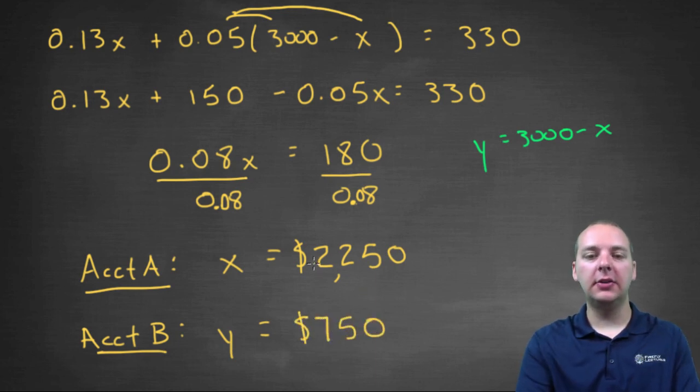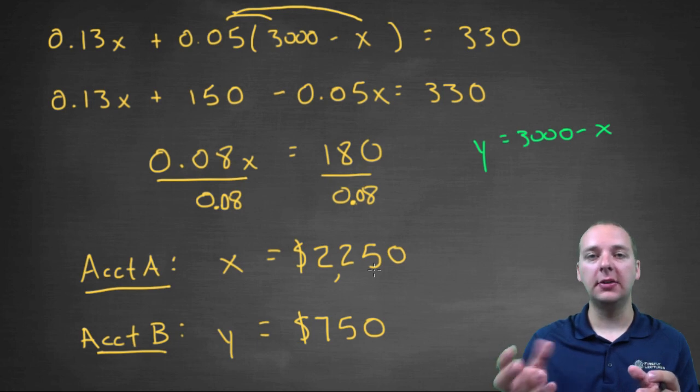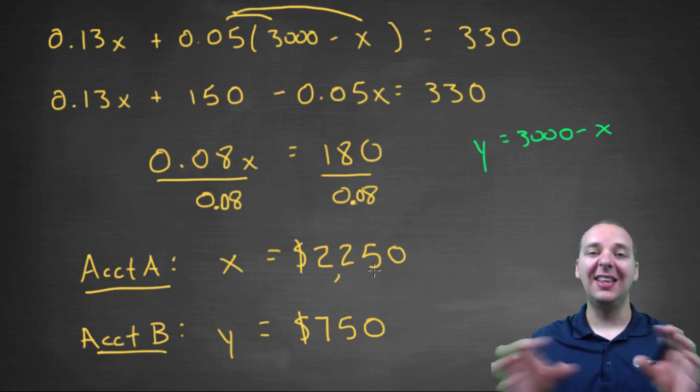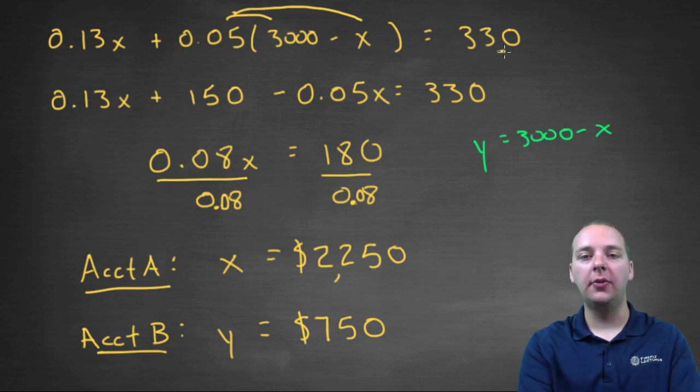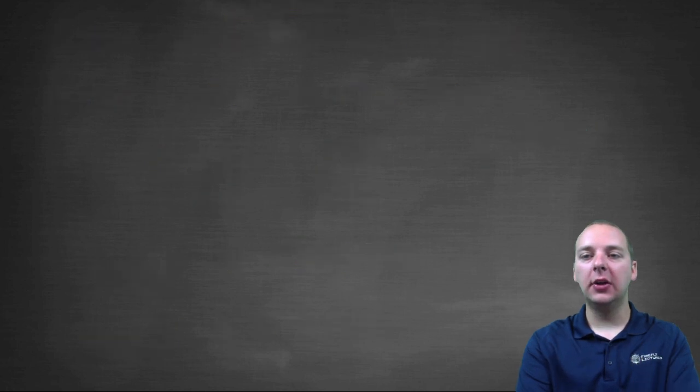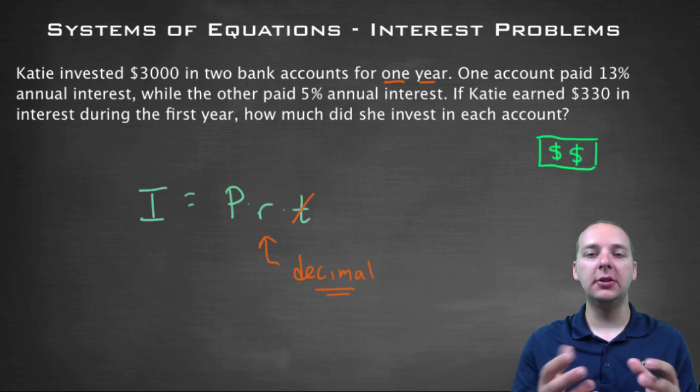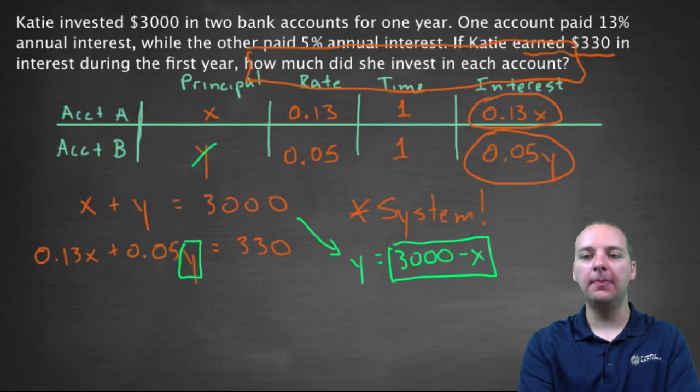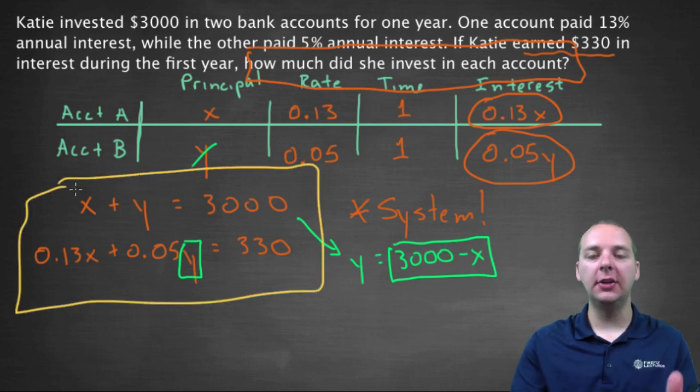So perfect, so if you invest two thousand two hundred and fifty dollars in the account that pays thirteen percent, and seven hundred and fifty of the three thousand dollars in the account that pays five percent, together the interest that each one would earn would add up to a total of three hundred and thirty dollars. So again, this is a great exercise where you're using systems of equations to do something interesting. You take your word problem, you set it up as a system, which is what we did here, you set it up as a system, and then you solve your system to get your answer.